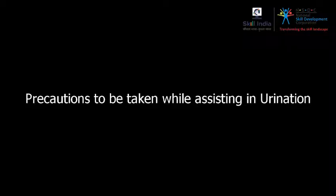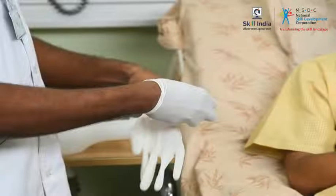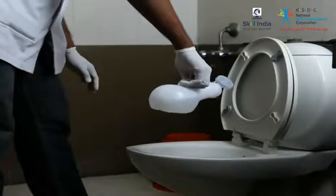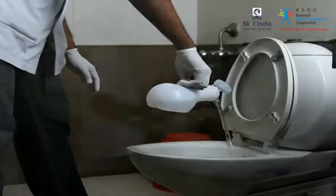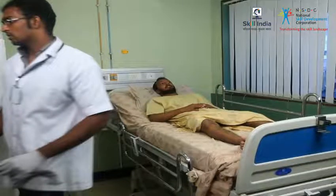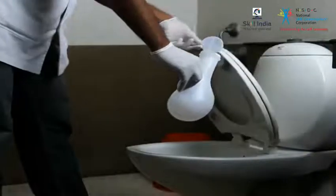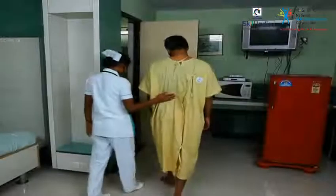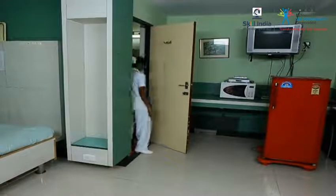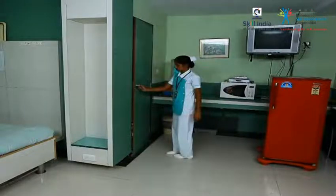Precautions to be taken while assisting in urination. Urine comprises waste materials that are poisonous to the body; once passed, urine should be drained in a toilet immediately. Urine should not accumulate in the surroundings of the bed or room as it can lead to infections with severe complications. You must take proper hygiene measures to prevent such infections. For patients who are able to move, help by keeping the toilet ready when they express the need. Instruct the patient not to latch the door from inside the toilet, as you cannot enter if the patient needs help.